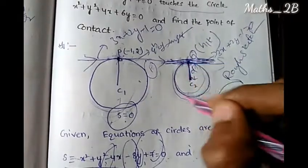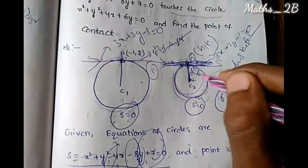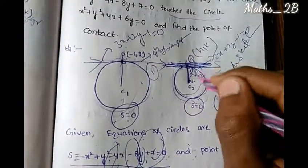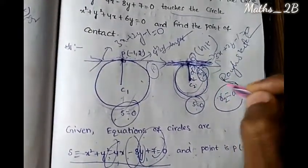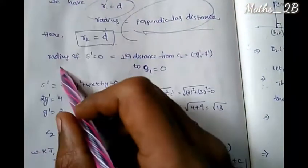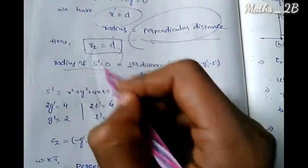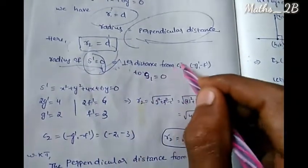D is equal to the radius of the circle. If we have a circle in the center, the perpendicular distance equals the radius. This is the condition r2 equals D. This is the radius of S', and this is the perpendicular distance from C2 to the tangent S1 equals 0.